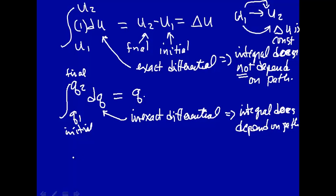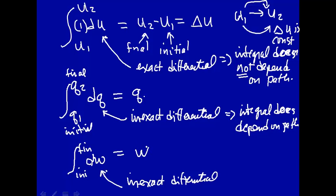Experience tells us that. And similarly, if we go from the initial to the final state of dW, dW also is an inexact differential. So it depends on path. So here we have to write W. That's the total amount of work done in going from the initial state to the final state. And that total amount of work done depends upon the path.